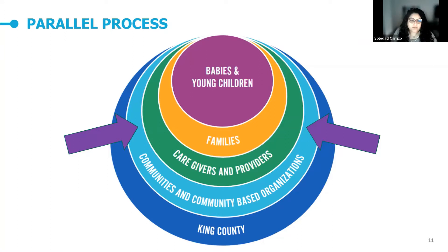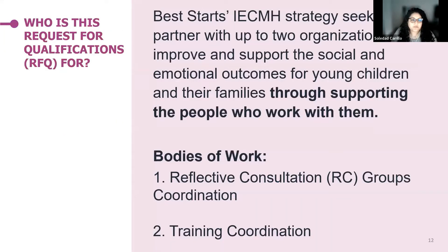To be able to make the true change that we want to transform in our systems and be able to serve all children in King County, especially young children and families, we know that we must support the people who dedicate themselves to caring for our youngest children and their families. The Infant and Early Childhood Mental Health Strategy is seeking to partner with up to two organizations to improve and support the social and emotional outcomes for young children and their families through supporting the people that work with them. We've grouped the work into two different bodies of work: the first is Reflective Consultation Groups Coordination, and the second is Training Workshops Coordination — for the duration of this presentation we'll reference it as training coordination.